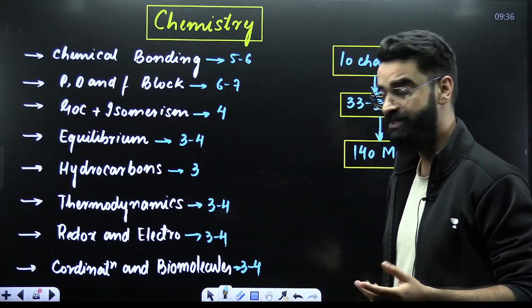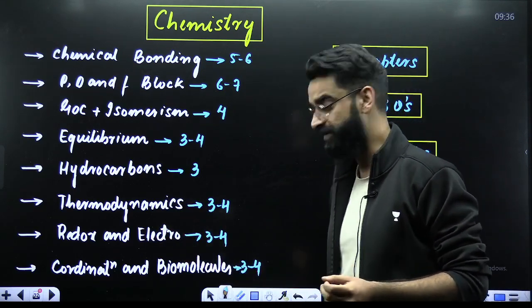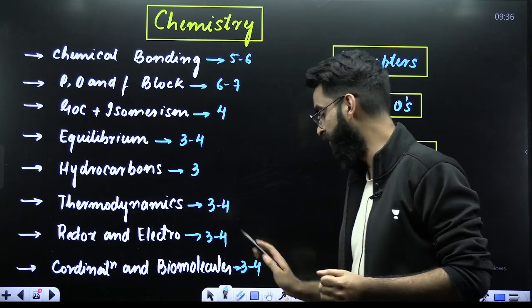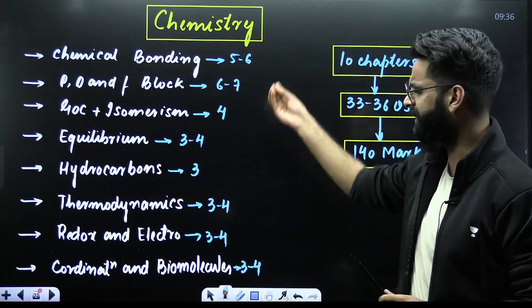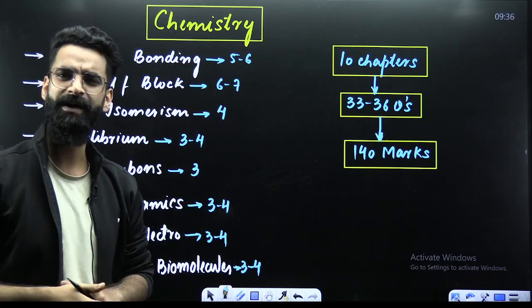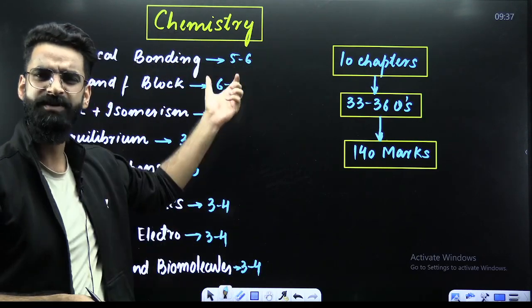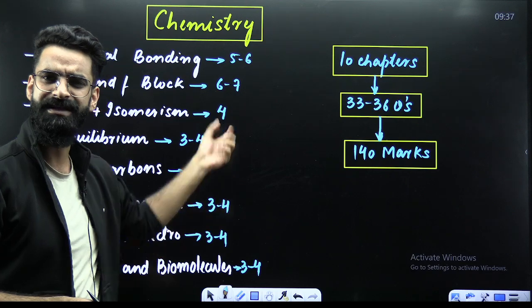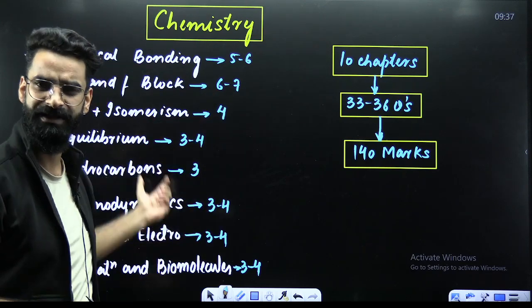Thermodynamics, 3 to 4 questions. Redox and Electrochemistry, 3 to 4 questions. Coordination and Biomolecules, 3 to 4 questions. These are your highest weightage chapters when it comes to your Chemistry. But if you look at the past 4-5 year papers, this is the weightage of the questions.